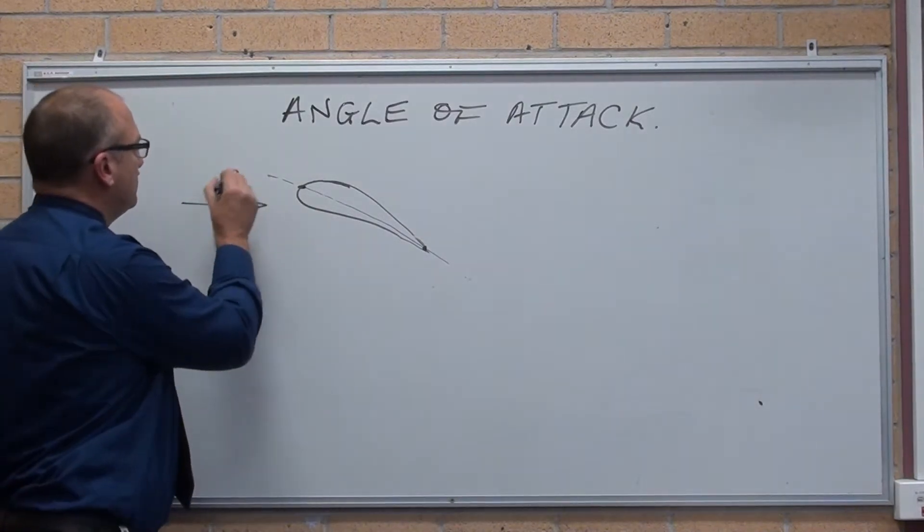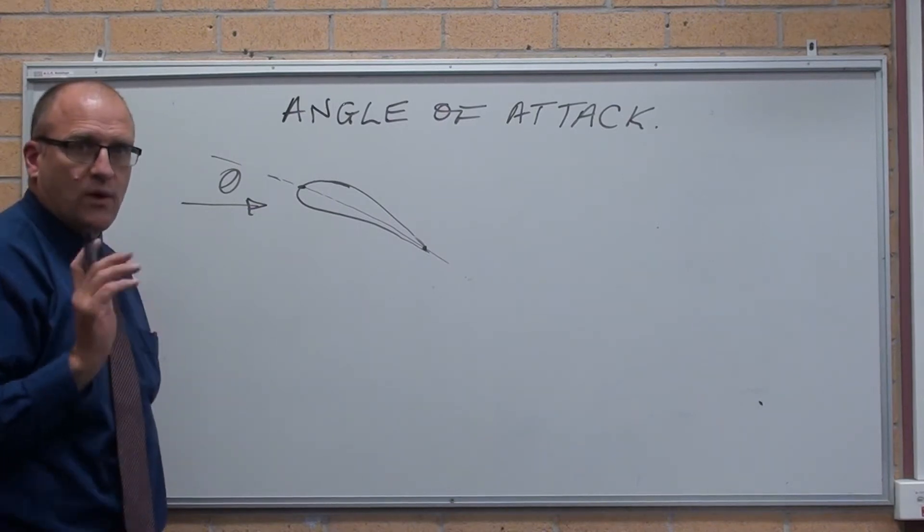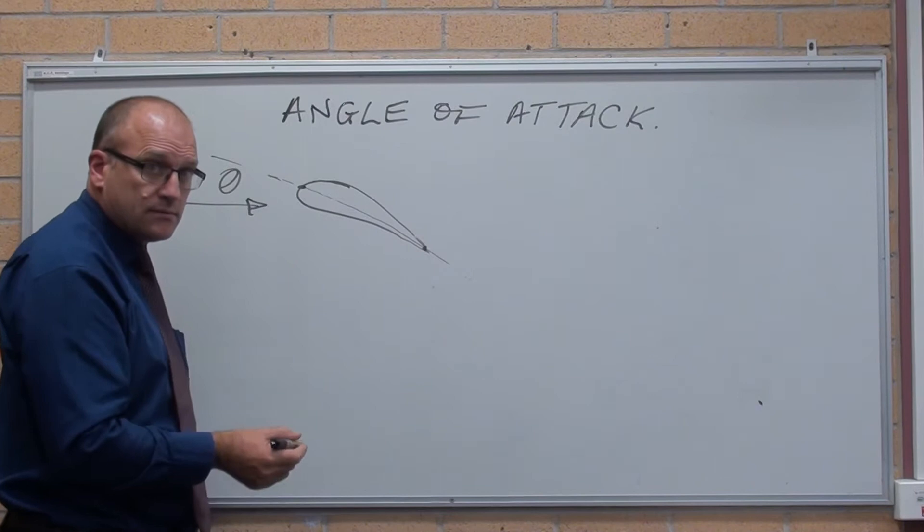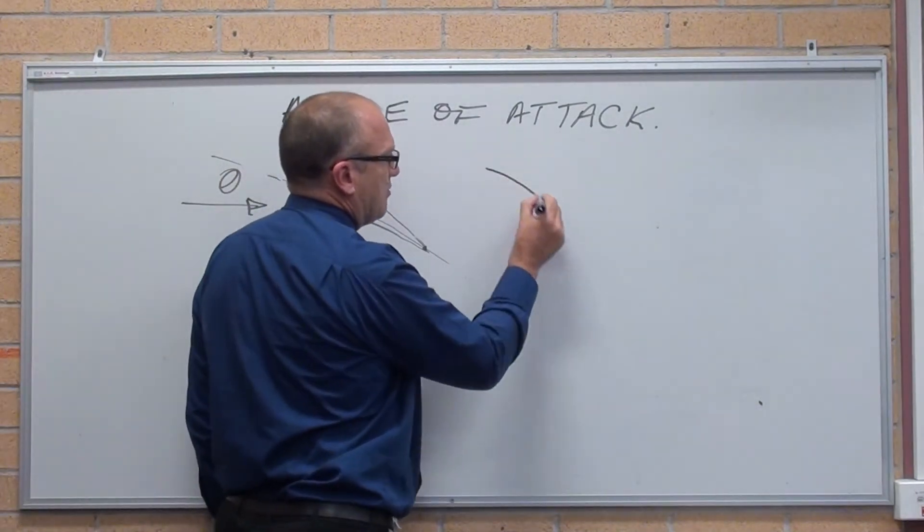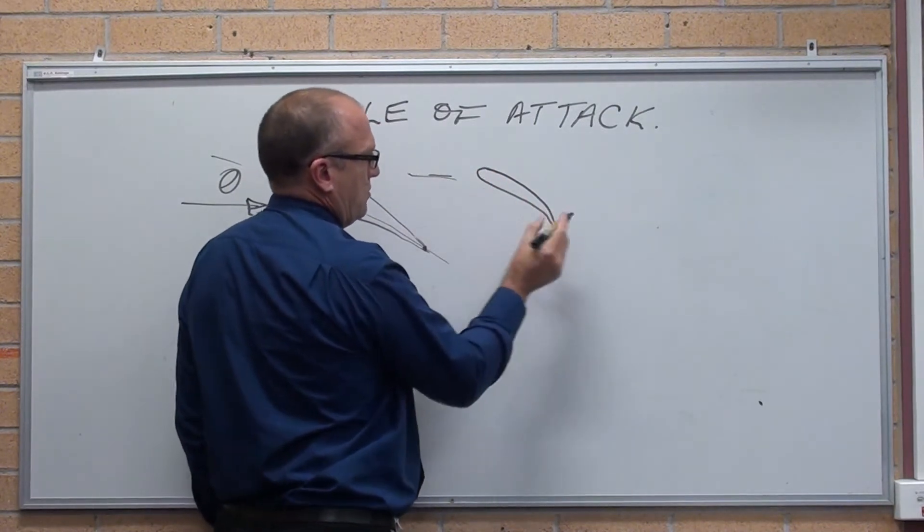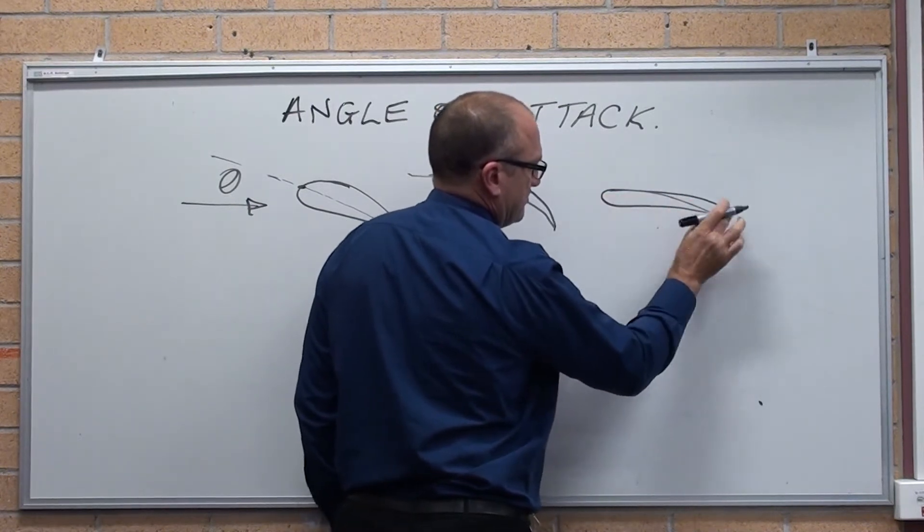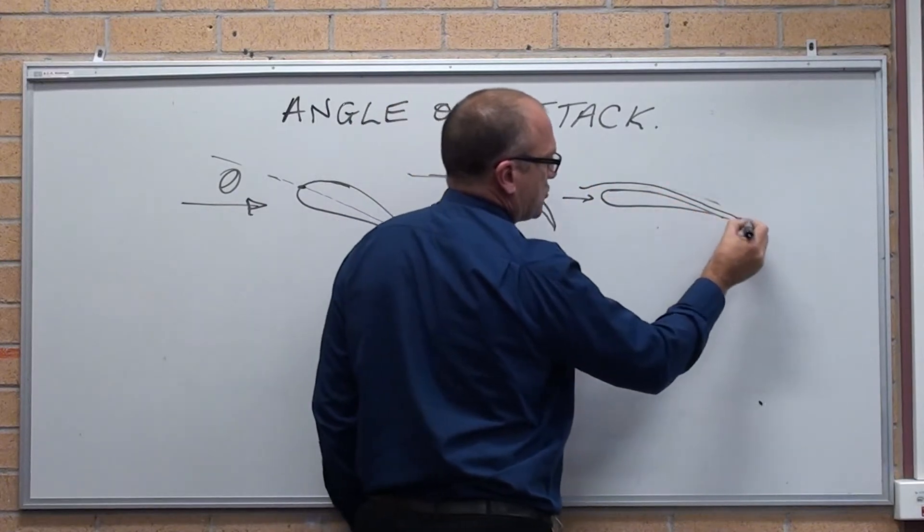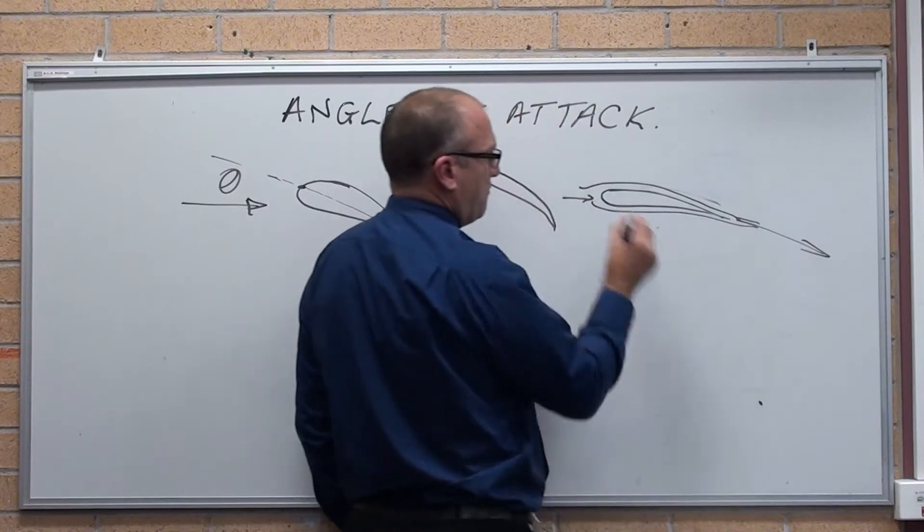That angle is the angle of attack. Wings are designed to run at a set angle of attack. What happens as I increase the angle, I'll draw a wing like this first. When it's parallel to the direction of flight, the airflow goes round.